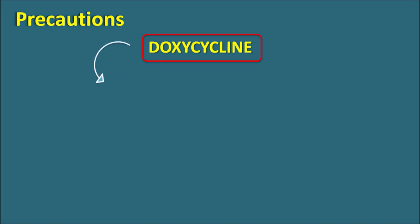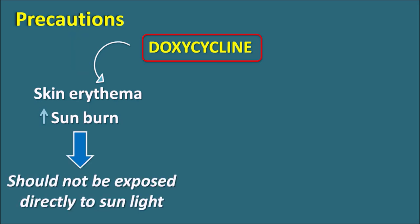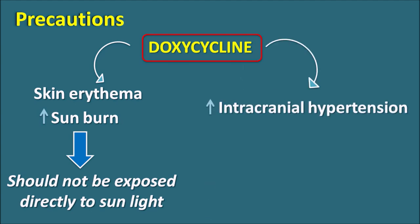A third important precaution is that doxycycline can produce phototoxicity, resulting in skin erythema and an increased risk of sunburn. Therefore, patients on prolonged doxycycline therapy should not be exposed directly to sunlight. This drug can also increase intracranial hypertension, so it should be used carefully in patients who already have raised intracranial blood pressure. It can also increase blood urea nitrogen.